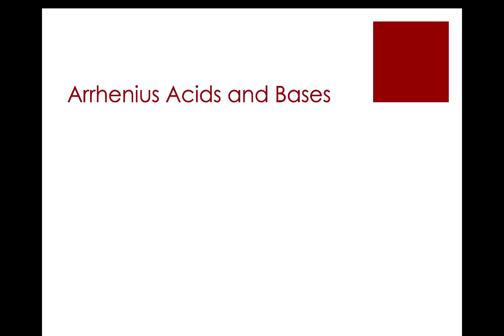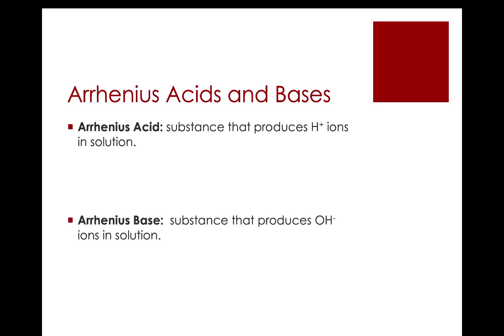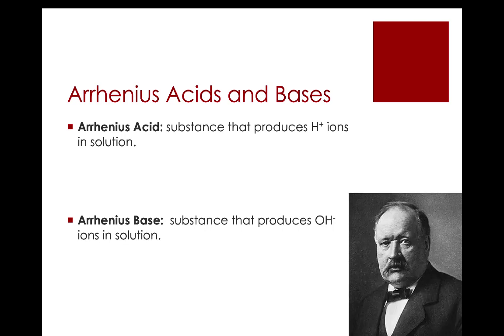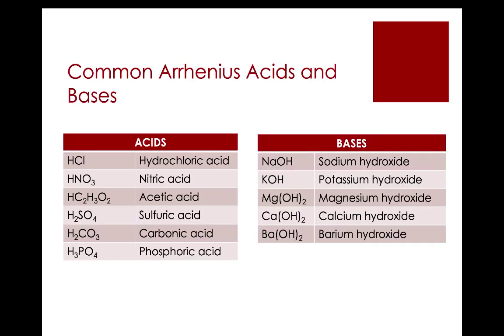There's lots of definitions of acids and bases. We'll start with the definition presented by Arrhenius. An Arrhenius acid is a substance that produces H plus ions in solution. An Arrhenius base is a substance that produces OH minus ions in solution. There's Arrhenius down there in the corner. Some common Arrhenius acids and bases are listed here. Notice that Arrhenius acids have formulas that tend to end with an OH.